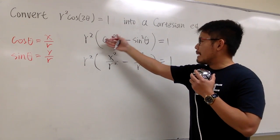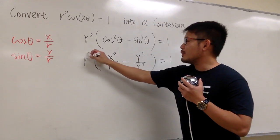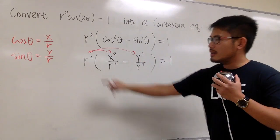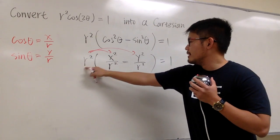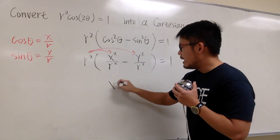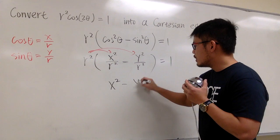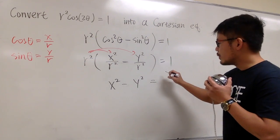So you see, I plug in first and then I'm going to distribute r squared right here. And what happens? This and that will cancel, this and that will cancel. All together we just have x squared minus y squared, and this is equal to 1.